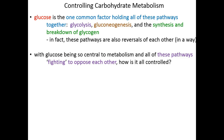With glucose so central to metabolism and these opposing pathways almost fighting with each other, the question becomes: how is it all controlled? How does the cell know where to send glucose and what to do with it? How does a cell avoid getting stuck in an infinite loop where glycolysis occurs and is followed by gluconeogenesis, over and over — stuck in the rat wheel of glucose to pyruvate to glucose to pyruvate?